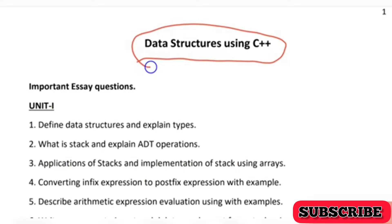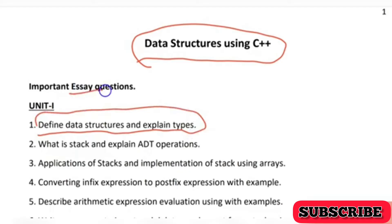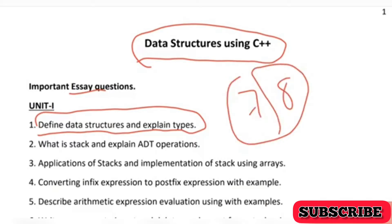This is a subject of BSc Computer Science, third semester. We are going to discuss the important questions of each unit in Data Structures Using C++. Starting with Unit 1, the first important question is: define data structure and explain its types. This is an essay question, typically for seven to eight marks, covering the definition and types of data structures like static and ephemeral.